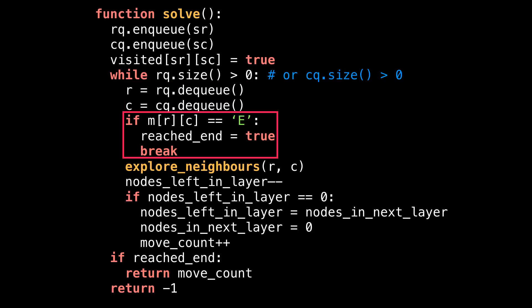Then I check if we've reached the dungeon exit by checking if the current character in the grid is an E. If it is, then mark that we've reached the exit and break out early. Otherwise, we're not done exploring and we want to add all the valid neighbors of the current node to the queue. I wrote a function called explore_neighbors that will do just that. Let's have a look.